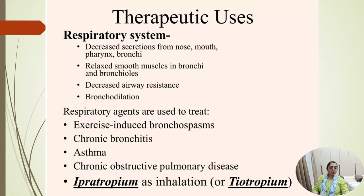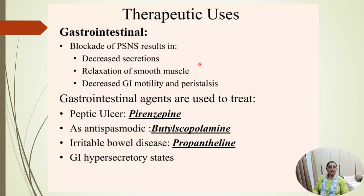In the gastrointestinal tract, blocking the parasympathetic nervous system results in decreased secretion, relaxation of smooth muscle, decreased GI motility, and decreased peristalsis. GI agents are used to treat peptic ulcer (pirenzepine), antispasmodic — butyl scopolamine — irritable bowel disease (propantheline), and GI hypersecretory states.